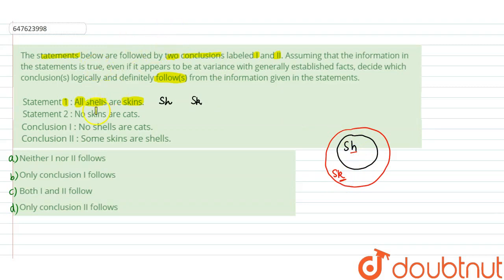आगे statement 2 है: No skins are cats. Skin और cat में कोई relation नहीं है मतलब ये एक दूसरे से disjoint हैं तो cat को हम capital C से denote कर लेते हैं और कहा गया है कि skin और cat बिल्कुल एक दूसरे से disjoint हैं यानि इनमें कुछ common नहीं है.